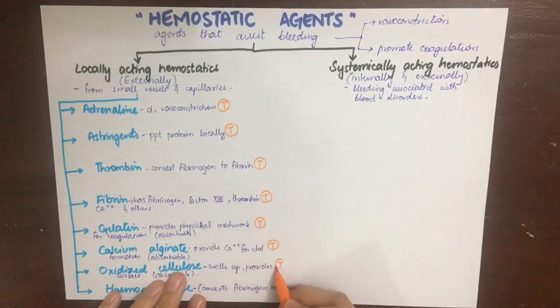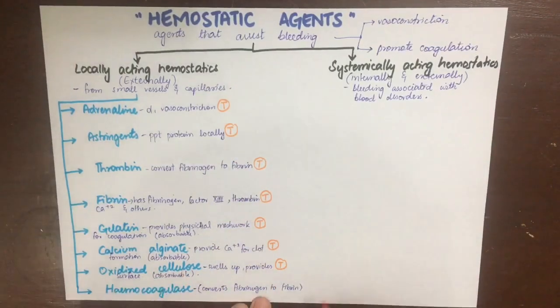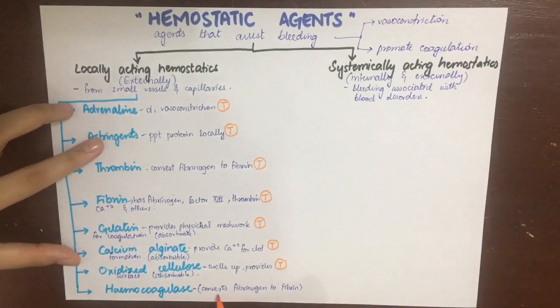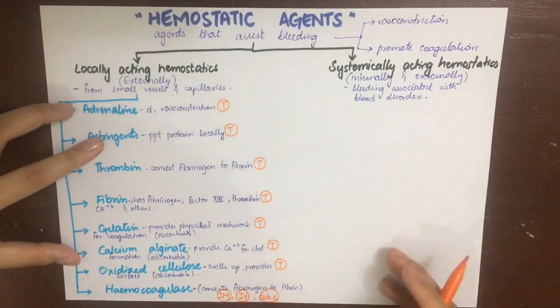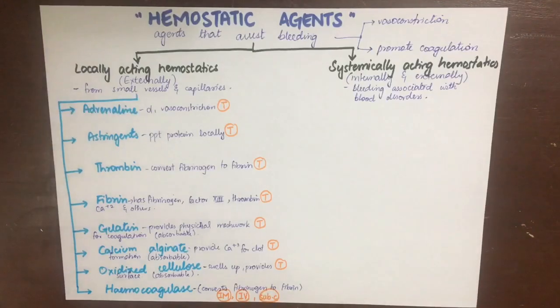Adrenaline, astringents, thrombin, fibrin, gelatin, calcium alginate, and oxidized cellulose can be given topically, while heme coagulase will be given intramuscularly, intravenously, and subcutaneously.